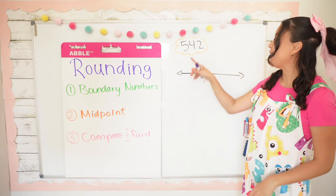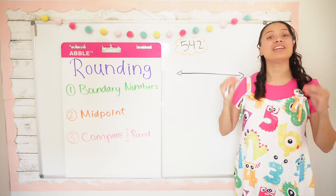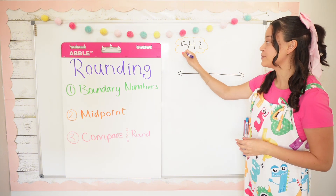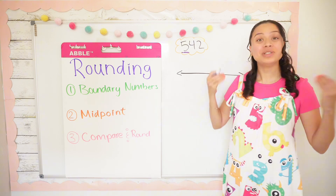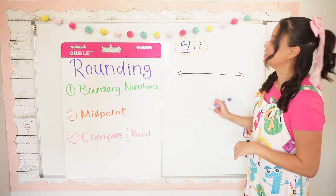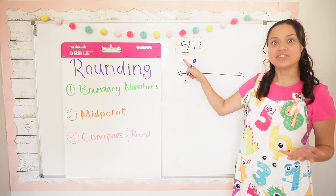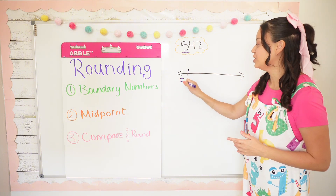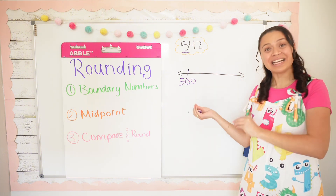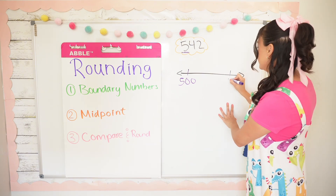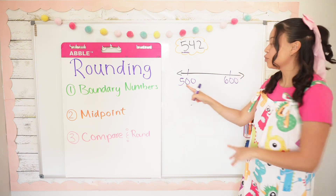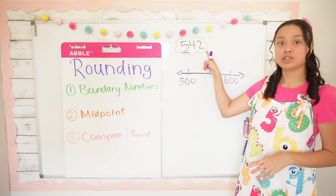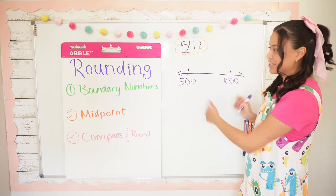Alright math besties, our first example is the number 542 and our goal is to round it to the nearest hundred. I'm going to underline the hundreds place and do step one: establish the boundary numbers. What hundreds family does 542 live in? 500 — that's right. And what's the next hundreds family? 600. So these are the boundary numbers; 542 lives somewhere between these two numbers.